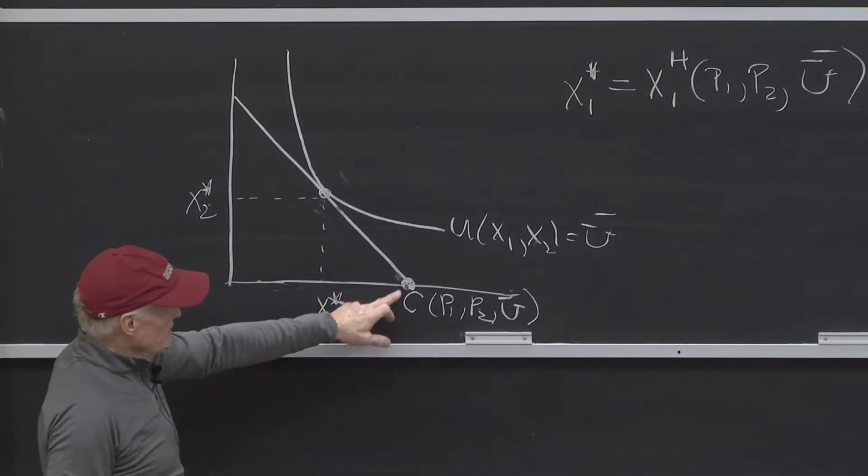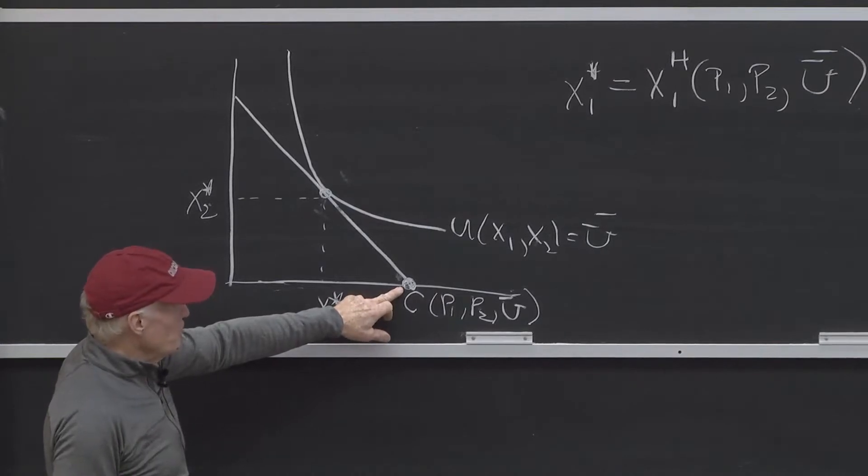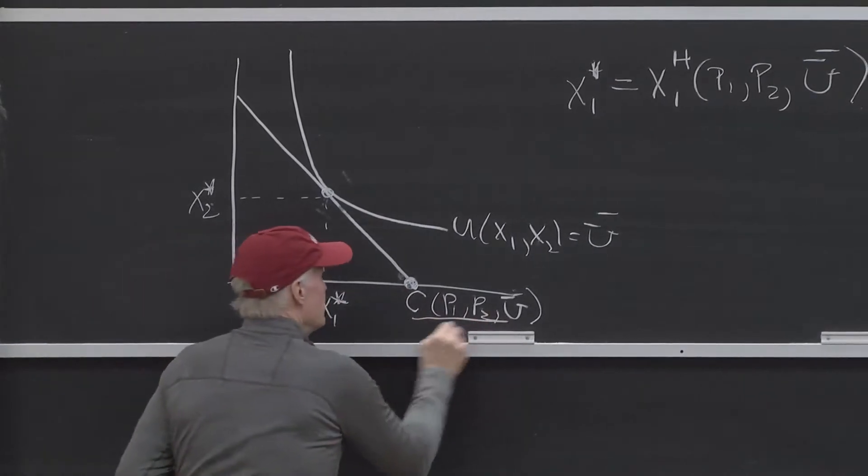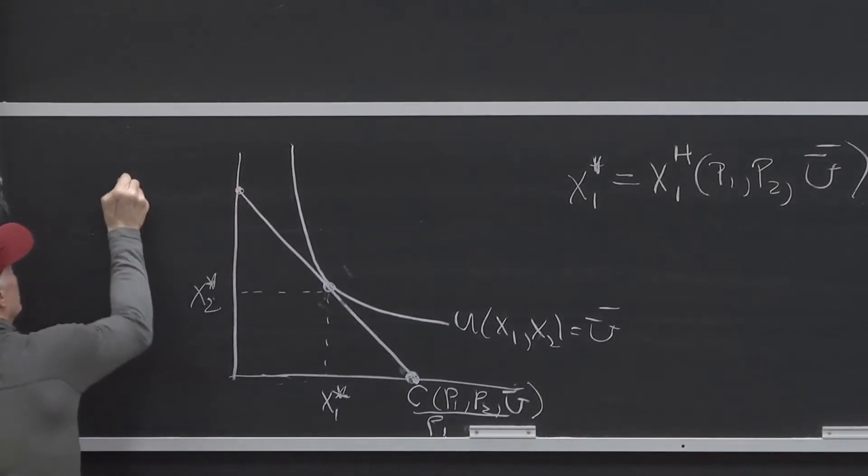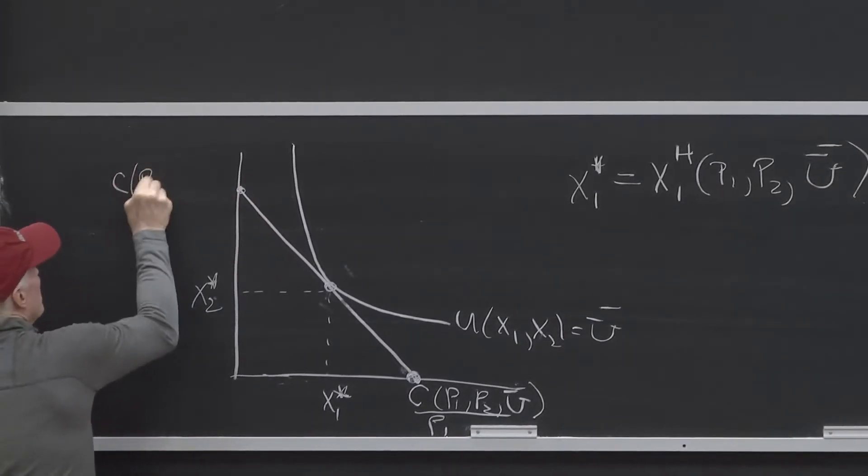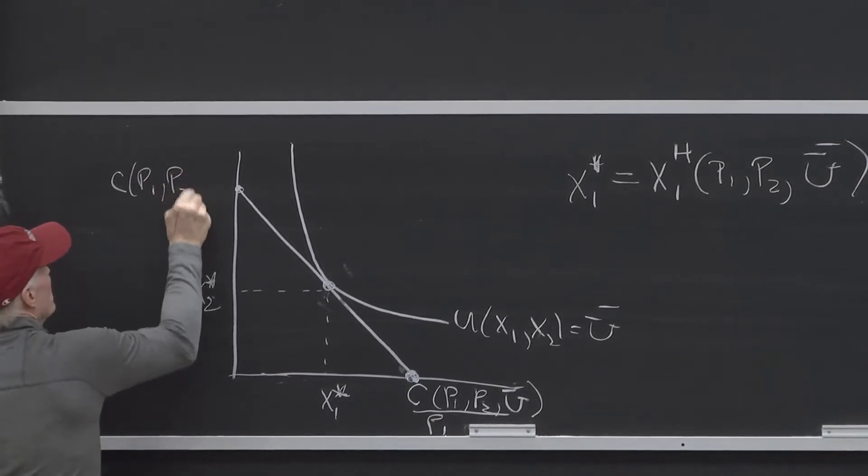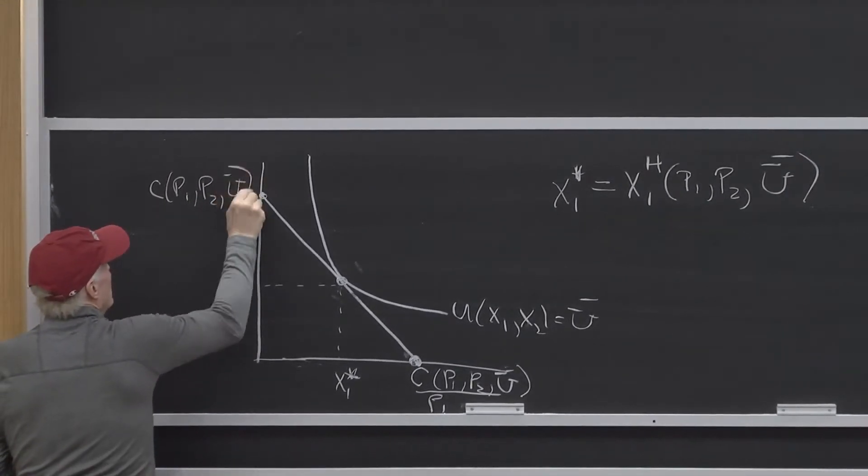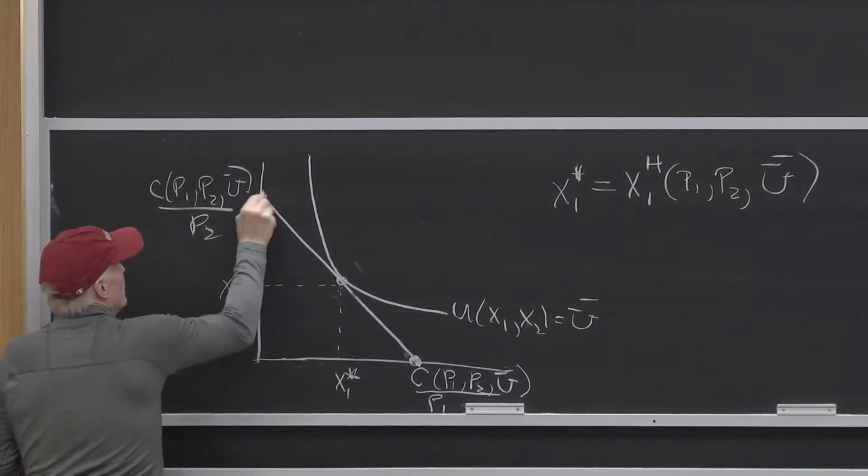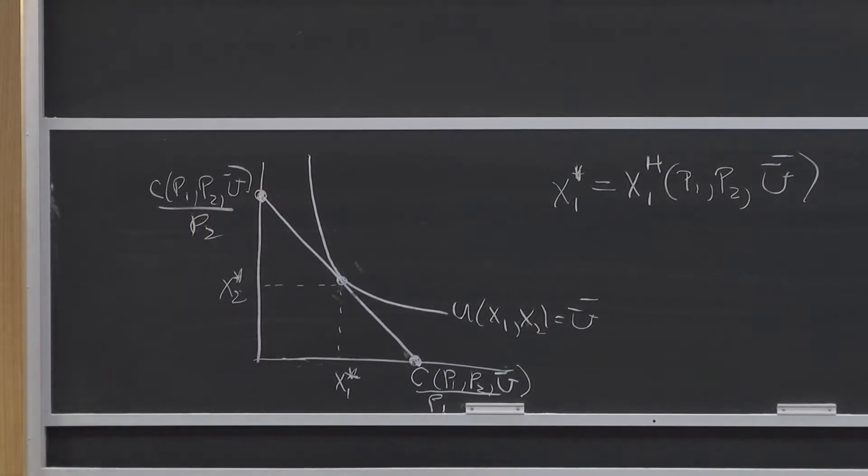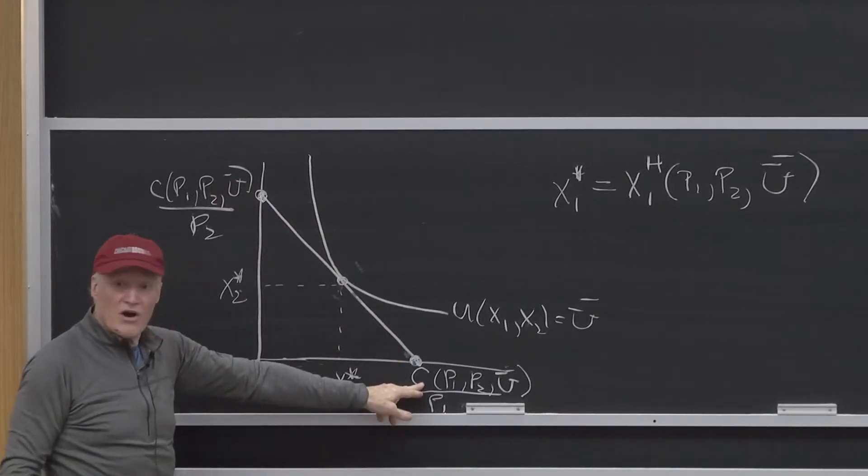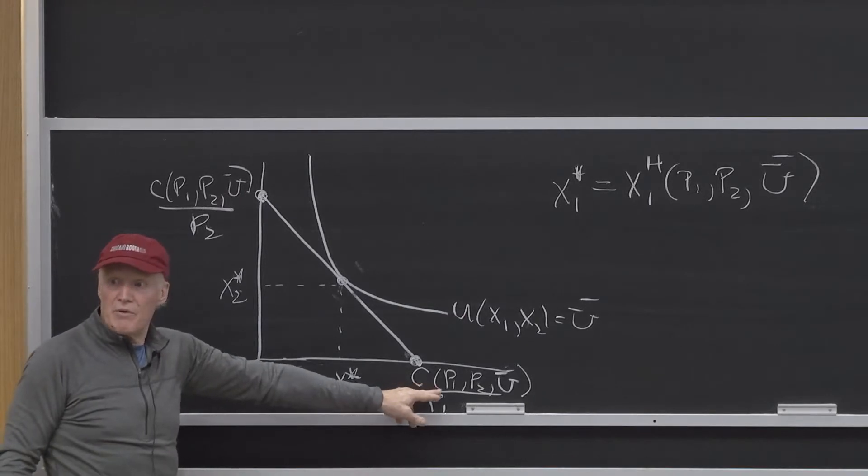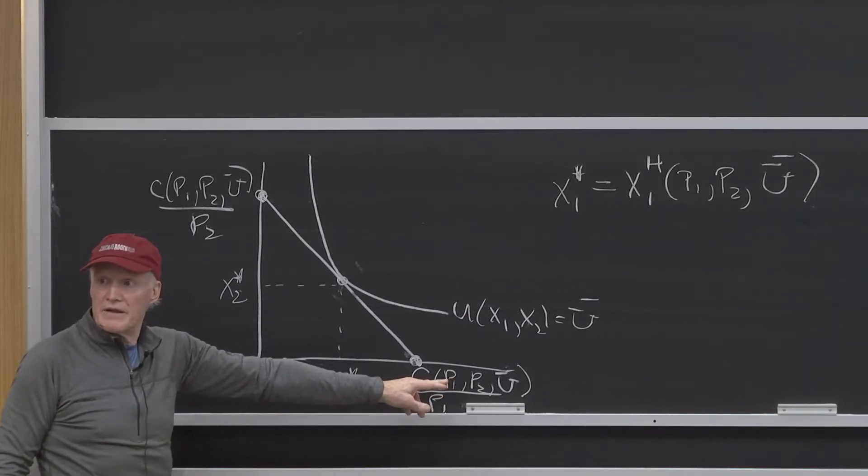But this is not the dollar value. It's how much X1 I could buy. So, that's that divided by P1. And this point here is C of P1, P2, U bar, divided by P2. Everybody understand that? That is, because that's the minimum cost level, the dollar value of that cost line must correspond to the cost curve C of P1, P2, U bar. Everybody get that?